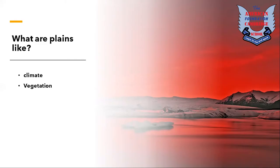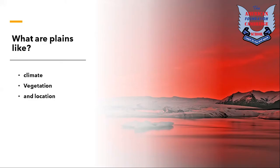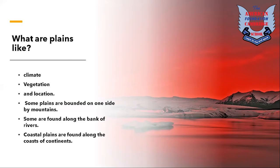Another very large plain region is the Great Plains of North America. There are different types of plains, each characterized by unique features like climate, vegetation, and location. Some plains, like the Great Plains of North America, are bounded on one side by mountains. Some are found along the banks of rivers, and coastal plains are found along the coast of continents.